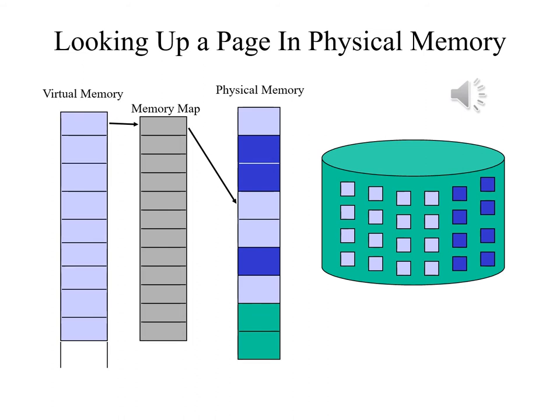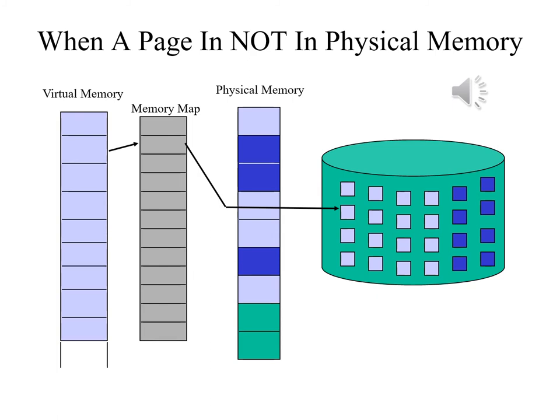Let's take a brief look at how virtual memory works. An instruction includes a reference to a memory location. The address includes a reference to a particular page of virtual memory. The page is looked up in the memory map, and it turns out that this page is in a particular frame — so we can look up the memory reference without a problem.